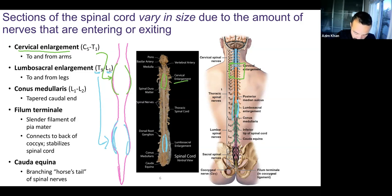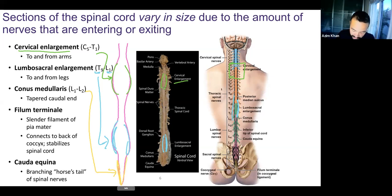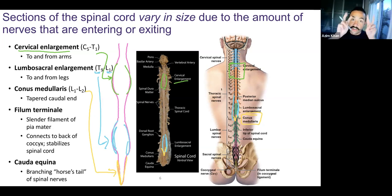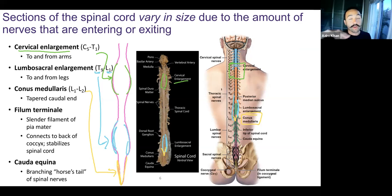The very end of the spinal cord tapers off, forming a cone shape — this is called the conus medullaris. Conus means cone, and medullaris means center portion, just like the medulla oblongata. The conus medullaris is the tail end of the spinal cord, the most caudal portion, and the end of the spinal cord ends around L1–L2.